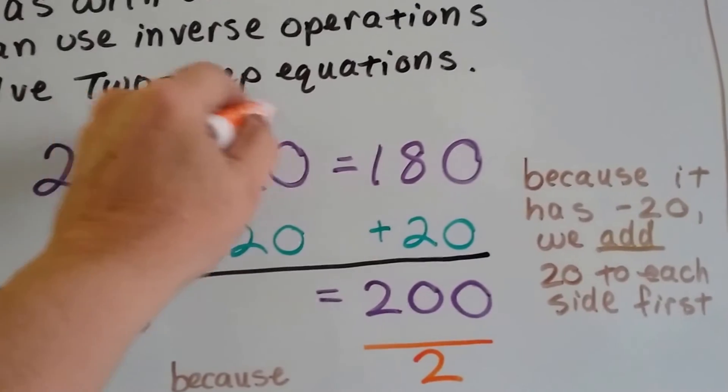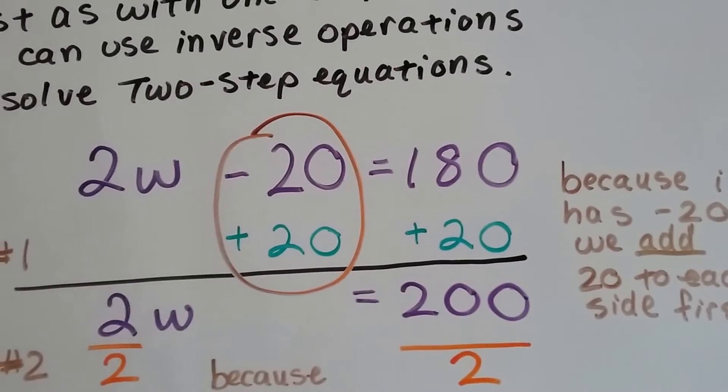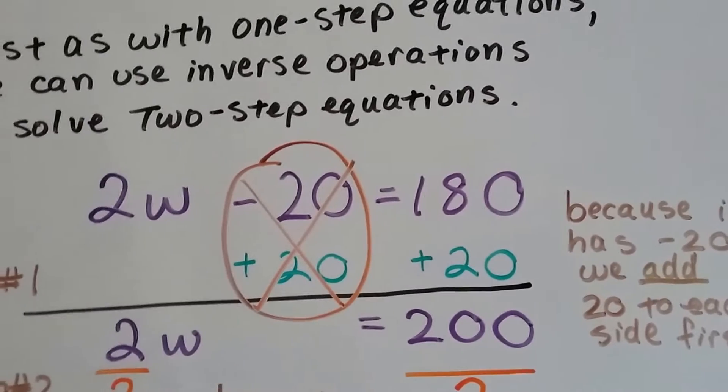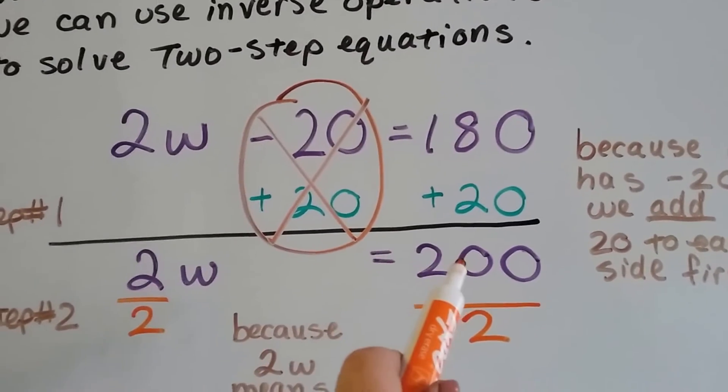So what's going to happen is this is going to become a zero pair. If we have negative 20 and we add 20, it's going to meet at zero. So now our equation says 2w equals 200.